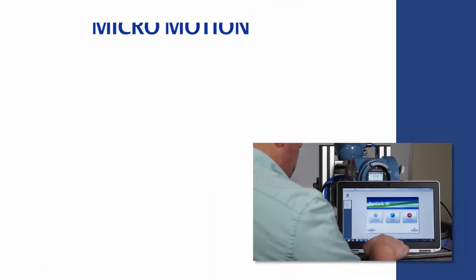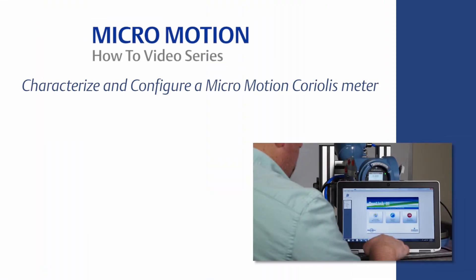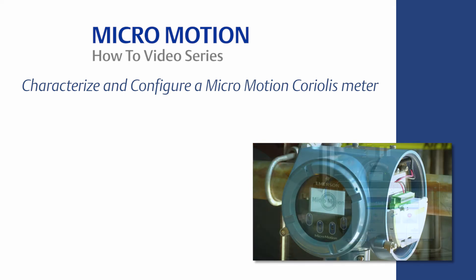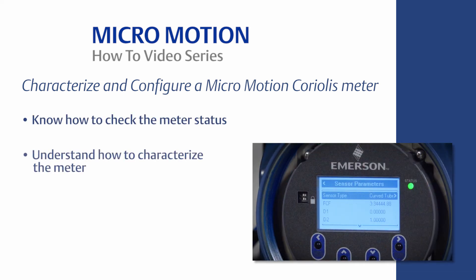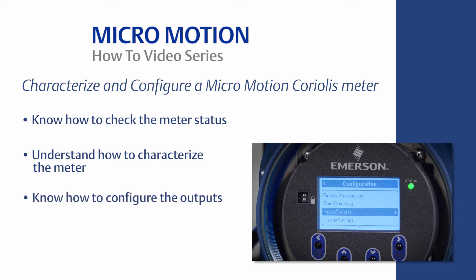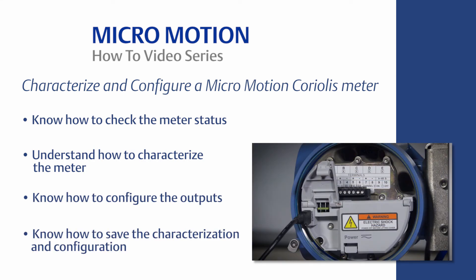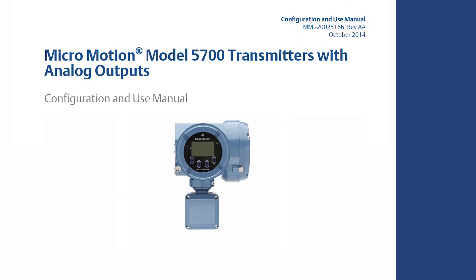This concludes the how-to video of Coriolis meter characterization and configuration. In summary, when using the model 5700 transmitter display, you should now know how to check the meter status, understand how to characterize the meter, know how to configure the outputs, and know how to save the characterization and configuration. For the complete set of configuration instructions, please refer to the Micromotion Transmitter Configuration and Use Manual, which can be found on www.emerson.com.